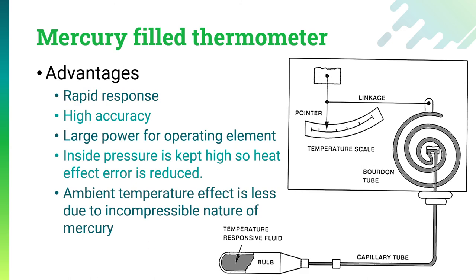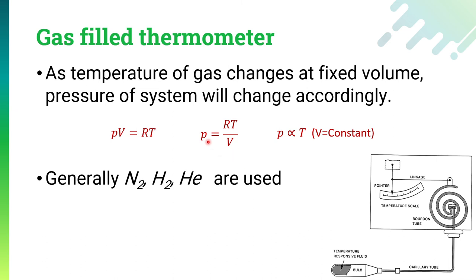Gas-filled thermometers are based on the ideal gas law, PV = RT. As the temperature of the gas changes at fixed volume, the pressure of the system changes accordingly — that is, pressure P is directly proportional to temperature T at constant volume V. The construction is almost the same as liquid-filled thermometers, except the bulb size is somewhat larger. Nitrogen, hydrogen, and helium are generally used in gas-filled thermometers.